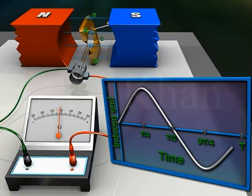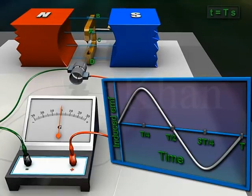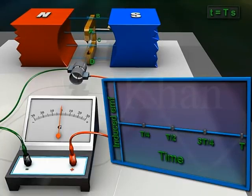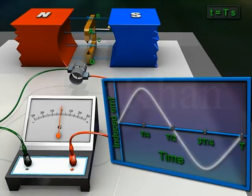During the fourth quarter rotation, the induced EMF decreases and becomes 0 at time T seconds as the armature is vertical once again. So the magnitude of the induced EMF is sinusoidal.